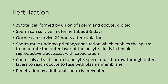The sperm can survive in the uterine tubes for about three to five days, but the oocyte can only survive for 24 hours after ovulation. If it is not fertilized within 24 hours, it is going to die, disintegrate, and be shed during menses. The sperm has to go through a process known as capacitation, or priming, which enables the sperm to be able to penetrate through the outer layer of the oocyte. This process is assisted by fluids present in the female reproductive tract.